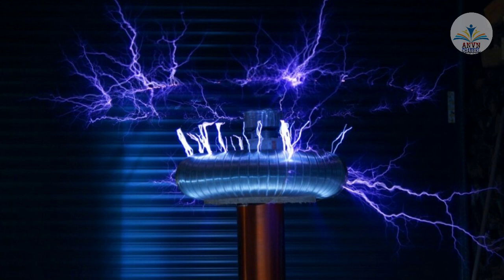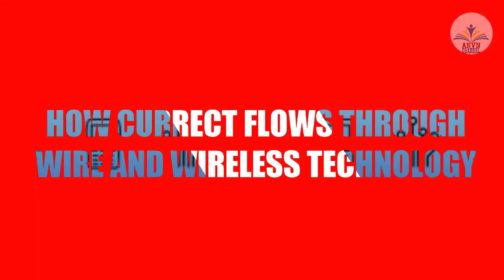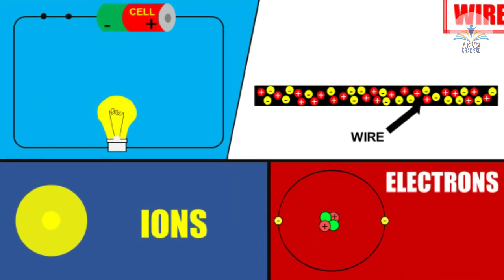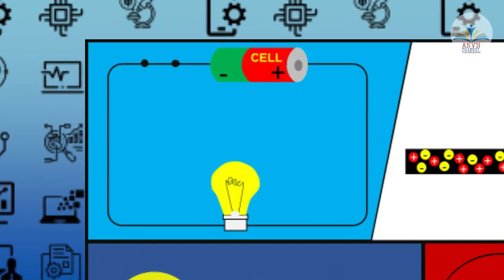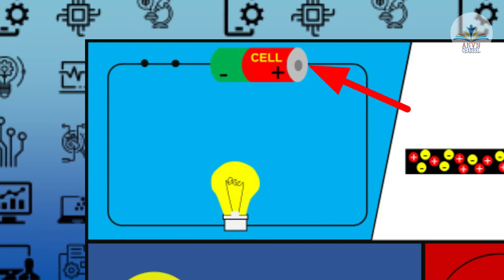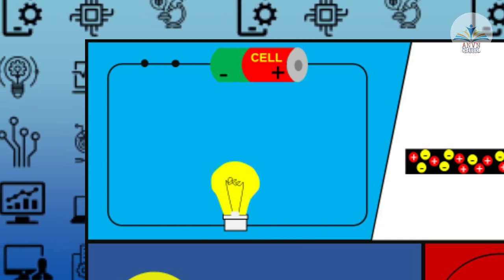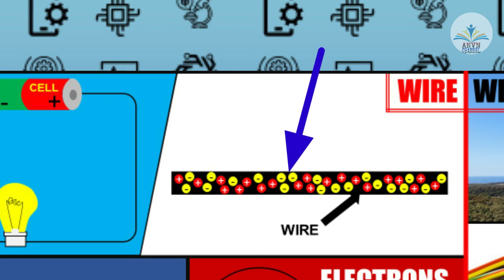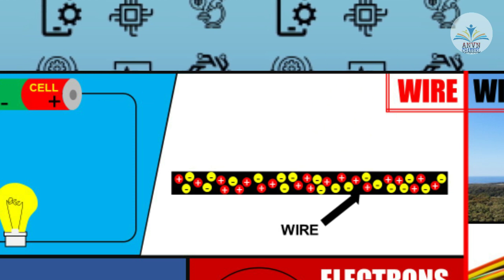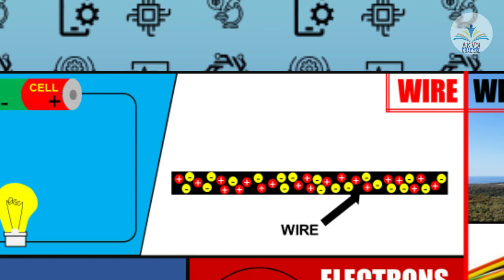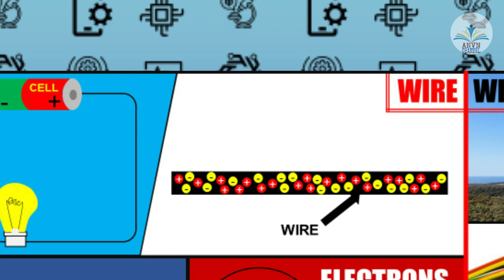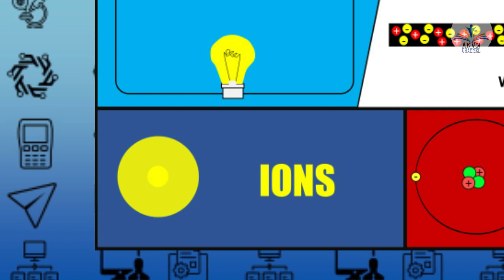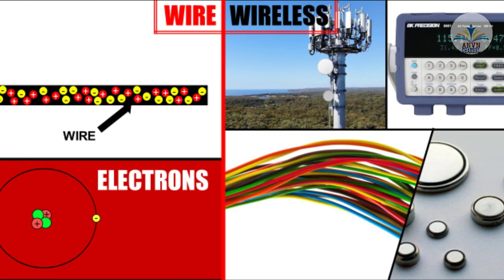First, to understand MROAD technology we need to understand the basics of electric current — how current flows through wire and wireless technology. An electric current is said to exist when there is a net flow of electric charge through a region. Electric charge is carried by charge particles, so an electric current is a flow of charge particles. The moving particles are called charge carriers, which may be one of several types depending on the conductor. In electric circuits the charge carriers are often electrons moving through a wire; in an electrolyte they are ions; while in an ionized gas or plasma, both ions and electrons are used.